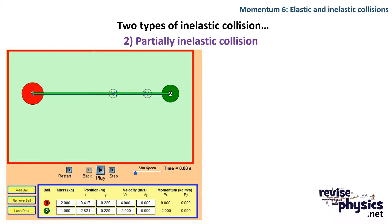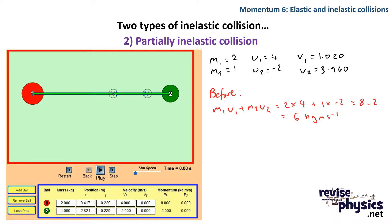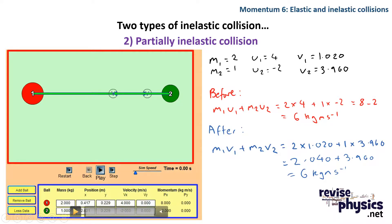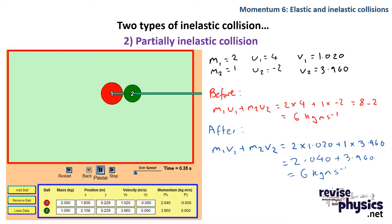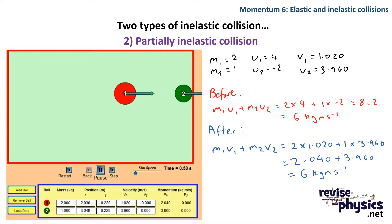A partially inelastic collision is where the two particles don't stick together but there is still a loss of kinetic energy. Looking at the starting parameters, we work out momentum beforehand by plugging in our numbers, getting 6 kilogram meters per second. The two particles collide but don't stick — they both end up moving in the direction that particle one was originally travelling in.